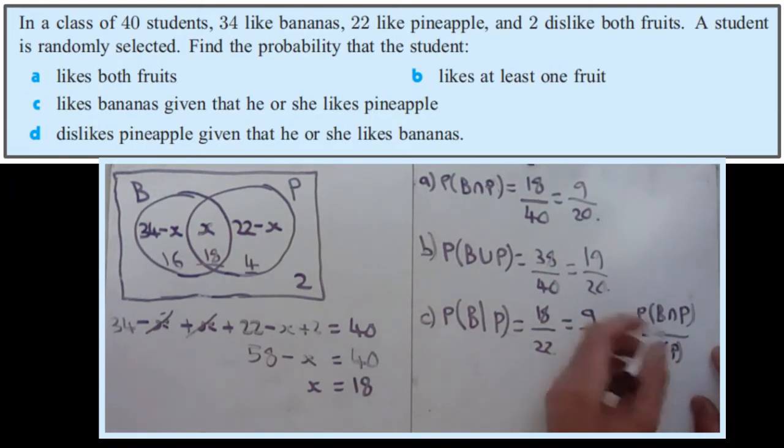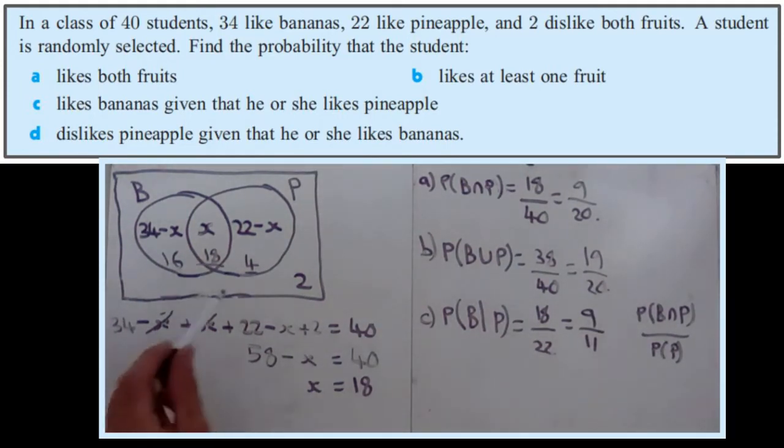In this case, the pineapples, PB. Haven't got space for it, but what you would do, you'd find the probability of them liking both, which would be 18 over 40. And then you would divide that by the probability of pineapples, which was 22 over 40. So 18 over 40 divided by 22 over 40 would still give you 18 over 22.